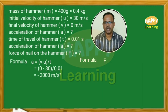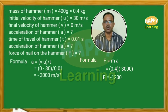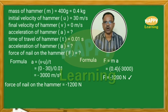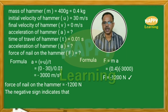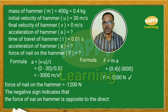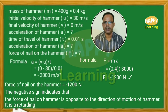Using F equals MA: F is equal to 0.4 into minus 3000, that is equal to minus 1200 newton. The negative sign indicates that the force of the nail on the hammer is opposite to the direction of motion of the hammer. It is a retarding force.